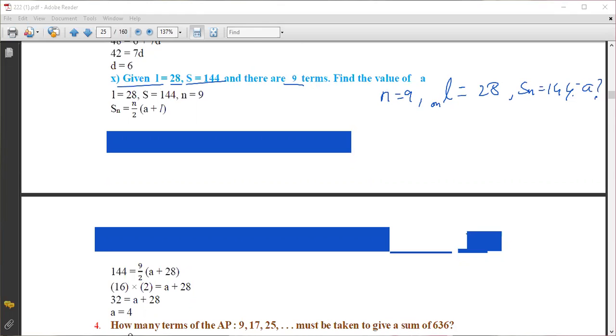Okay, now what will happen? We have one more formula here. Sn is there, and we have one more formula to find out the last term. Sn is equal to n by 2 into a plus l. Also, l we can write as last term, or instead of writing l we can write it as 'a' sub n also.